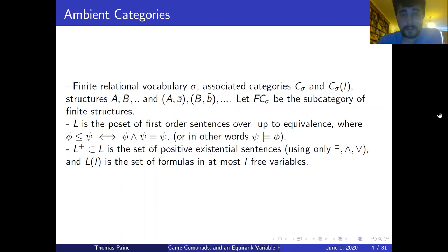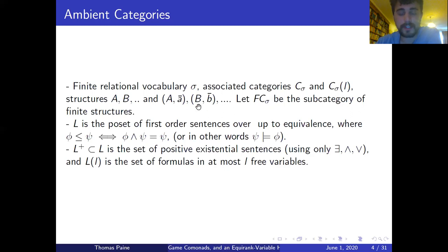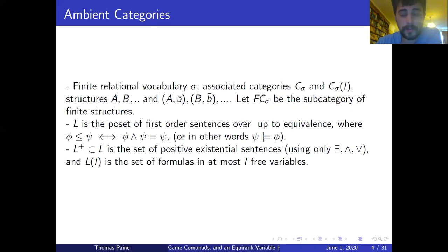To set the scene, we'll be working in a category of relational structures. We have a finite vocabulary consisting of relations and the associated category of sets which interpret those relations and morphisms between those sets. Sometimes we talk about the category of those structures with an associated distinguished tuple and morphisms between those which preserve not only the relations, but also the distinguished tuple.